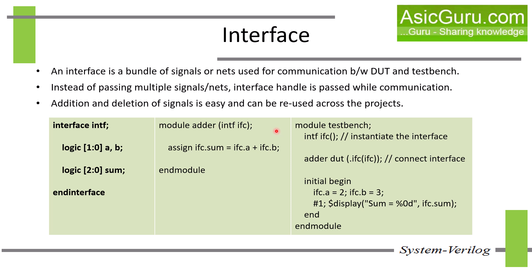Next we have a module 'adder', and inside this we are passing the interface 'ifc', and using ifc.a, ifc.b and ifc.sum for signal access. Next we have a test bench module. Inside this, first we are instantiating the interface, then connecting it with the DUT, and then driving the values using ifc.a and ifc.b. The main beauty of the interface is that adding or removing signals becomes very easy. If you want to add a signal, you just need to update the interface once — you don't need to update the port declarations of the design module or the test bench module, because you are not defining each signal manually; you are just using the interface.